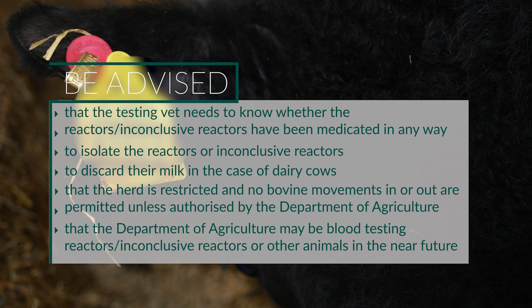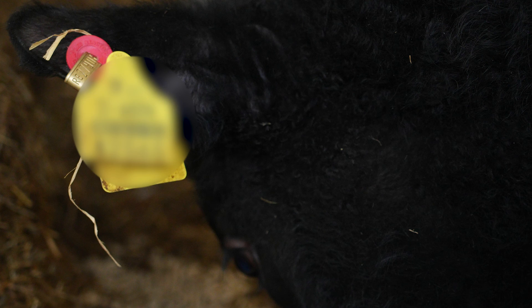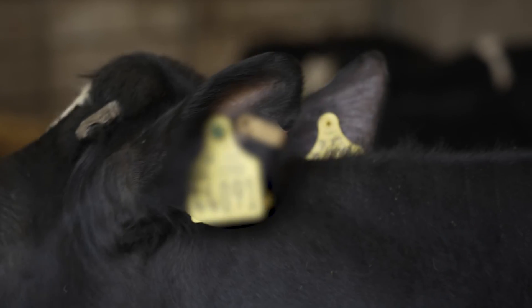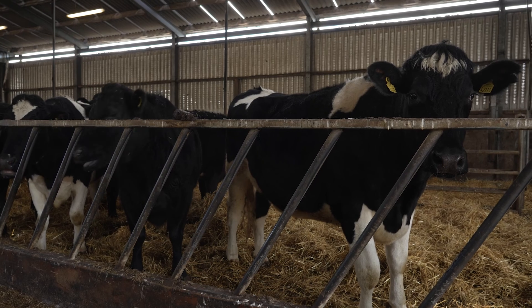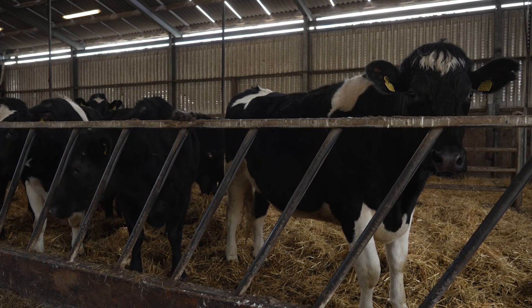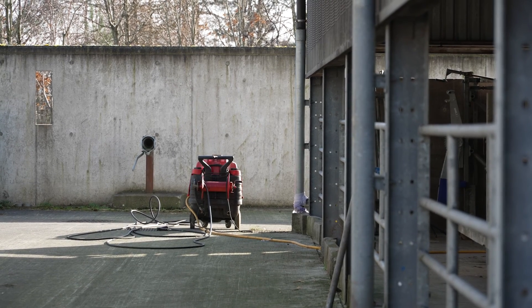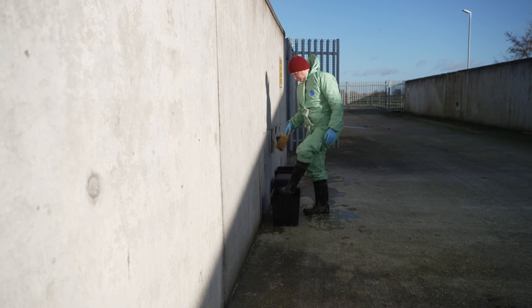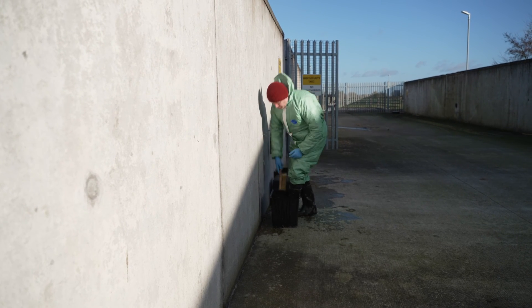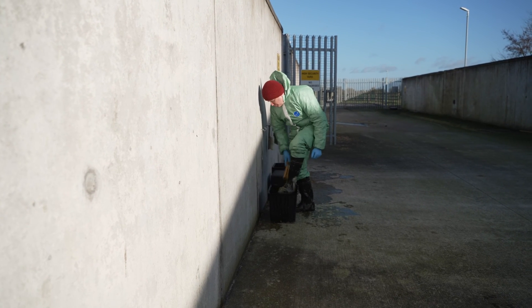The keeper should also be advised that the Department of Agriculture may be blood testing reactors, inconclusive reactors, or other animals in the near future. When animals are deemed reactors, the RVO must be informed on the day of the test or at latest the following working day morning. It is essential that all materials used are removed at the completion of the test, and a thorough cleansing and disinfection procedure must be carried out prior to departure.